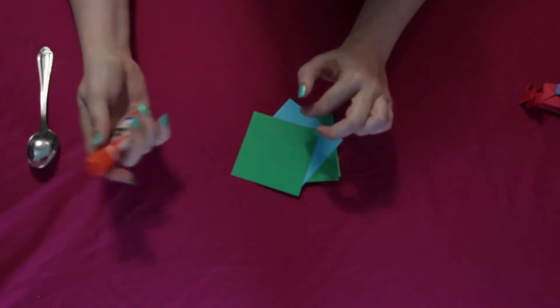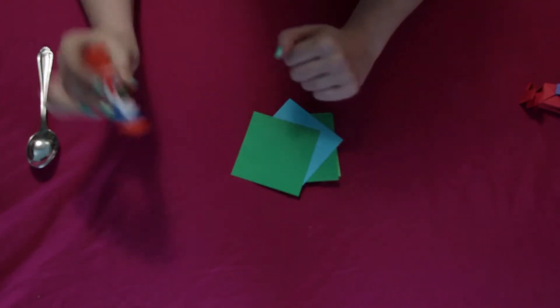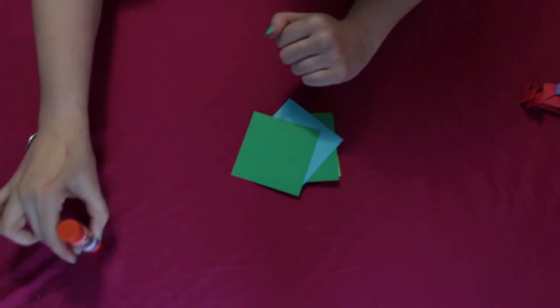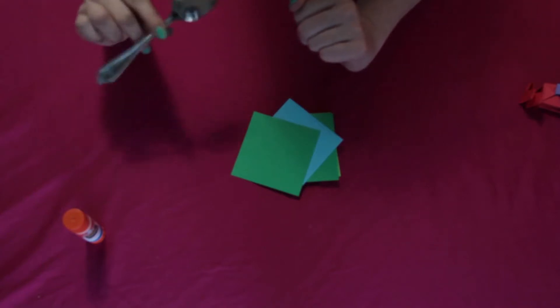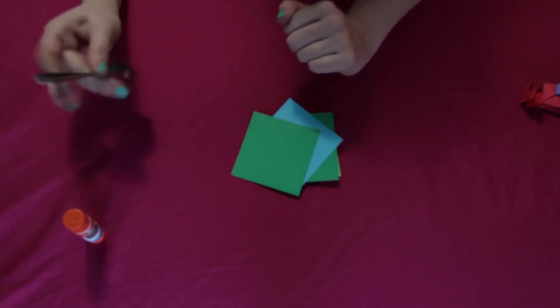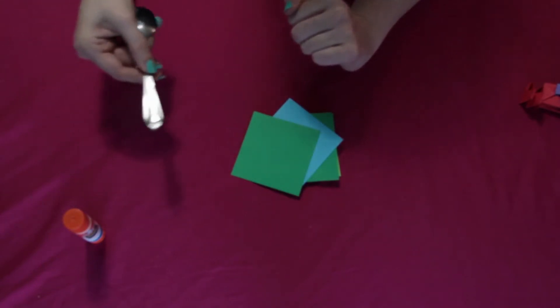You're going to want to have some glue handy. I'm using a glue stick, but you can use white glue just as easily. And you're also going to want a utensil. It doesn't matter what - it can be a spoon, a fork, or a butter knife. You just want something with a nice flat end on it to have handy.